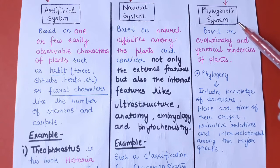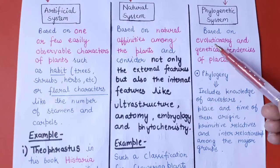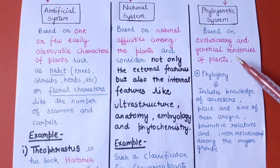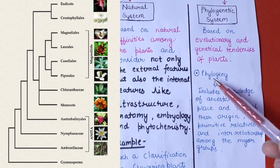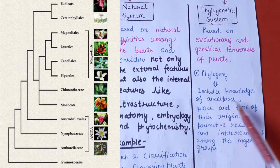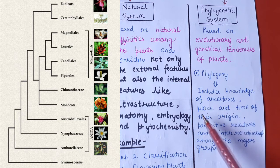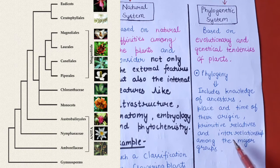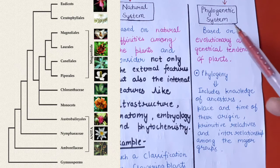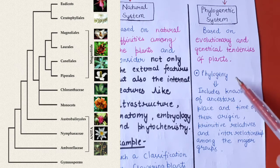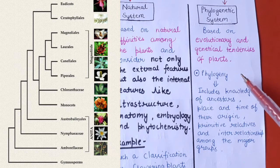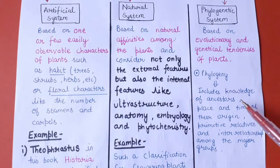The phylogenetic system of classification is based on evolutionary and genetical tendencies of the plants. The term phylogeny includes knowledge of ancestors, their place and time of origin, primitive relatives, and interrelationships among major groups. In the phylogenetic system, plants have been classified on the basis of their phylogeny — including knowledge of their ancestors, place and time of origin, primitive relatives, and interrelationships with different groups.